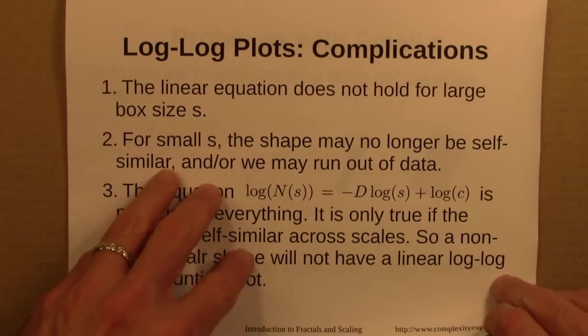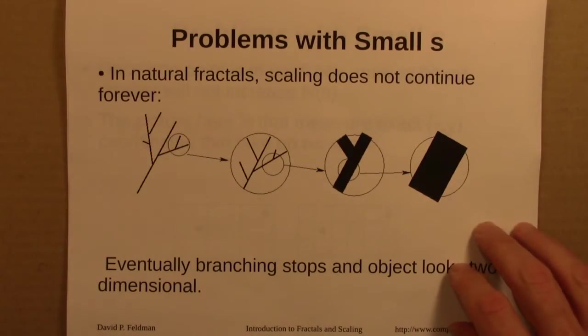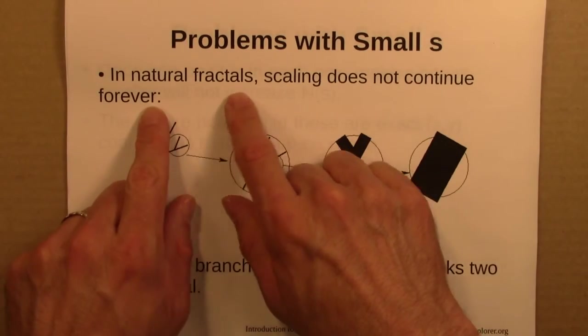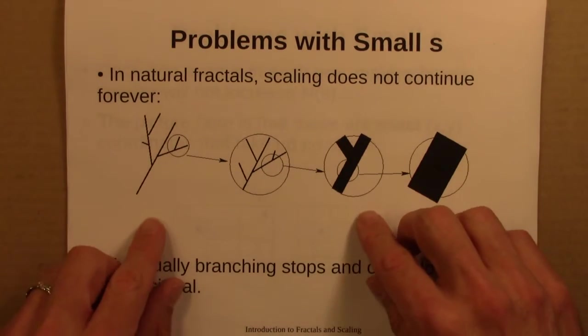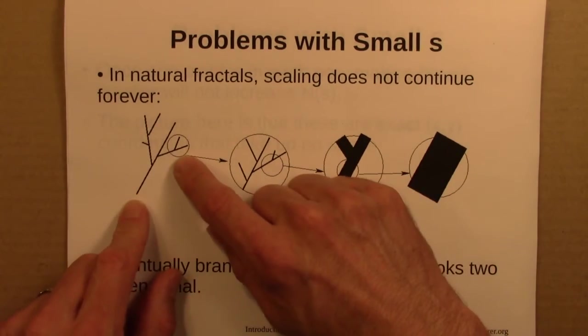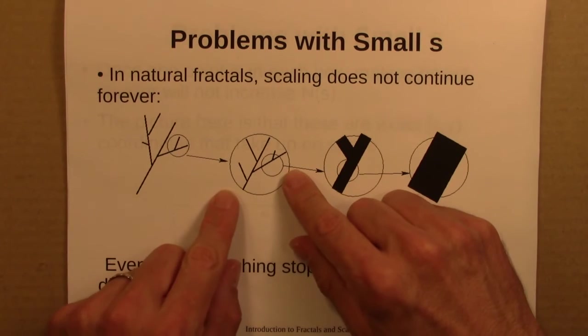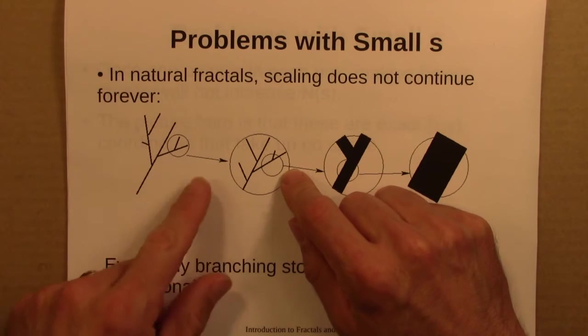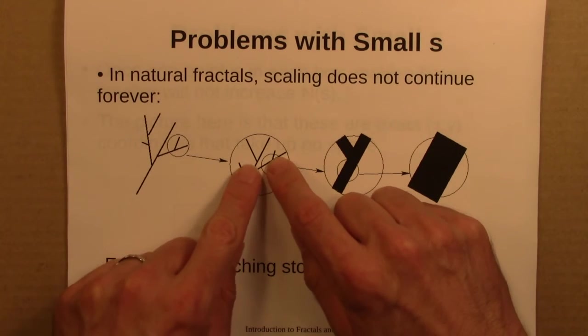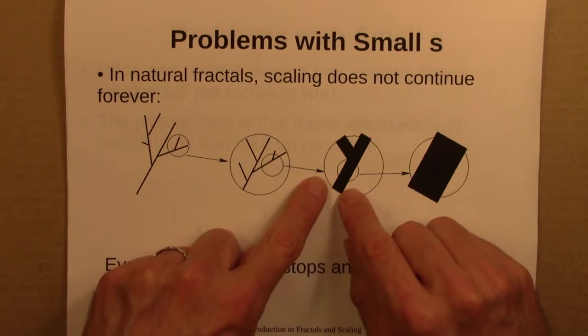Let me say a little bit more about some of these complications. So as I said, in natural fractals, scaling does not continue forever. So this is a really crude view of that. We might have a branch or a fern, and we zoom in, and we see more branches. And we say, hey, that's self-similar. And we could do that a few times. And then eventually we zoom in on branches, and we stop seeing new branches.